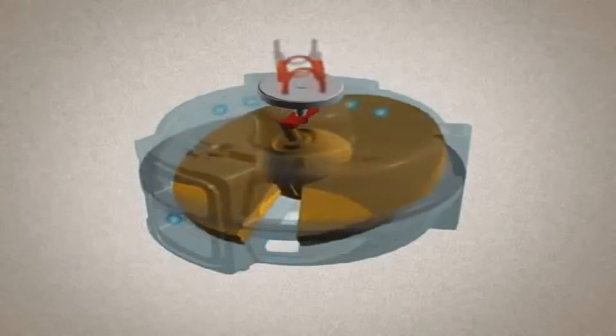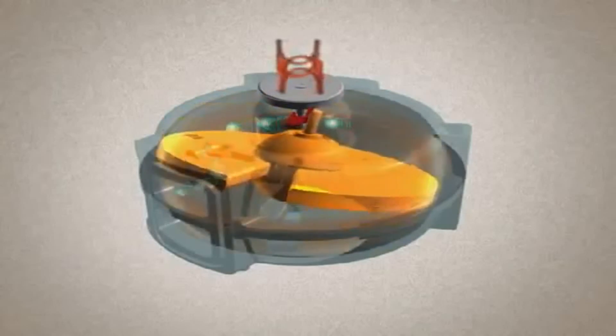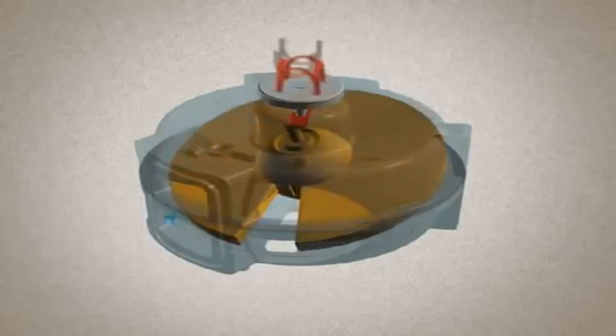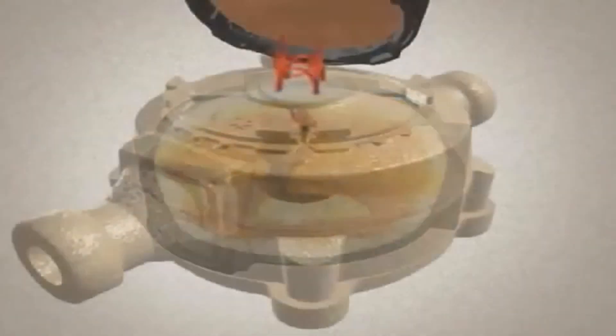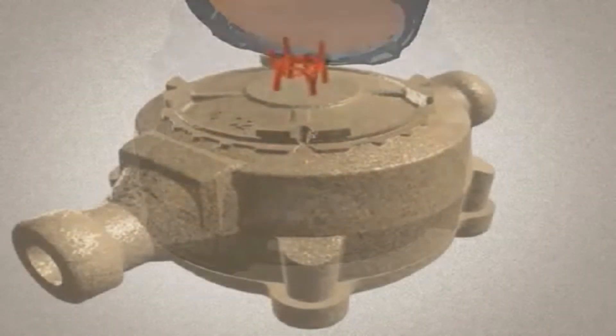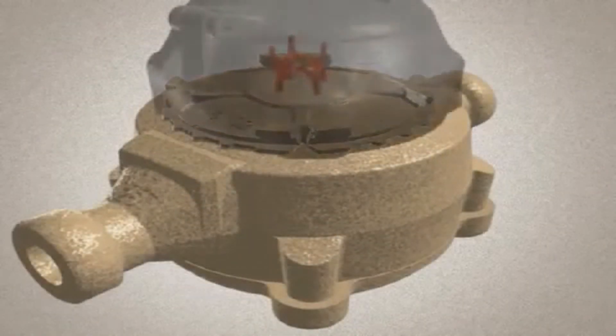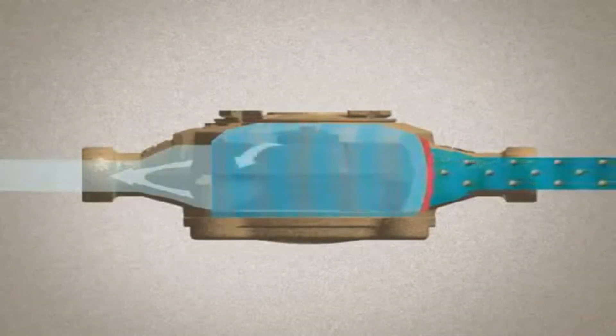The smooth motion of the disc also eliminates the annoying noise produced by some other types of positive displacement meters. As this happens, the nutating disc translates its movement through a magnetic coupling to the register. The water then leaves through the outlet port of the chamber assembly.